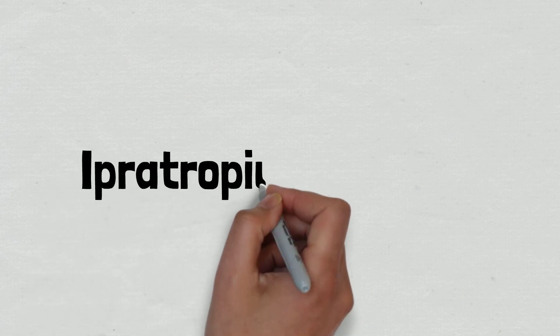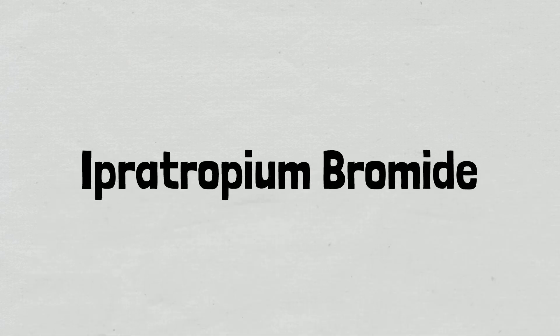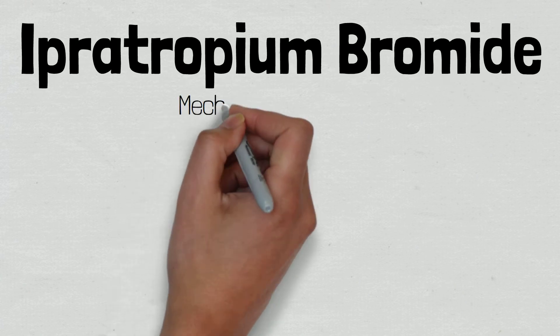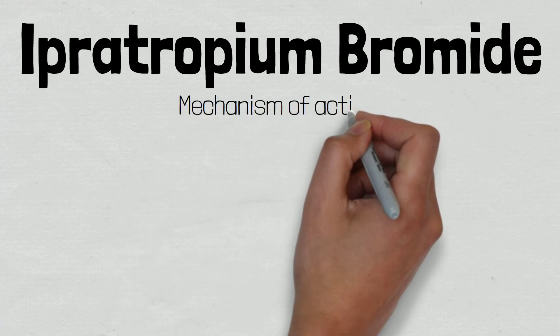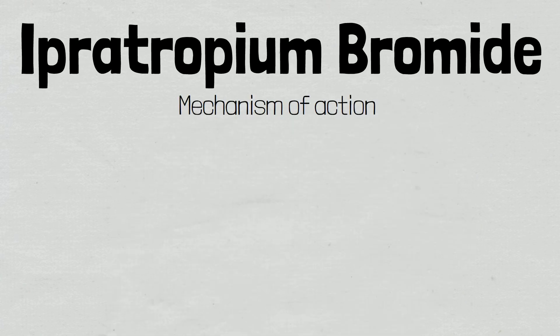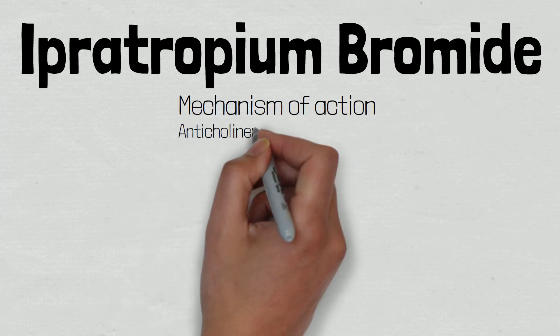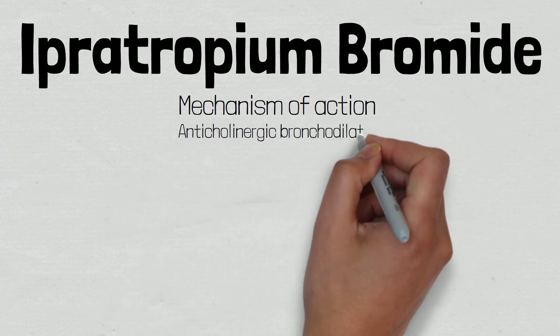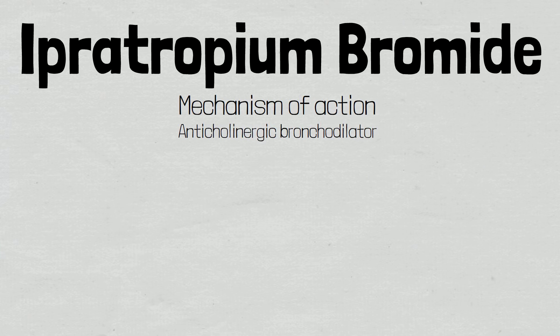Welcome to this video where we will be looking at the mechanism of action of ipratropium bromide. Ipratropium bromide is an anticholinergic bronchodilator, meaning it binds to a specific type of cholinergic receptor and inhibits its activation, leading to bronchodilation.